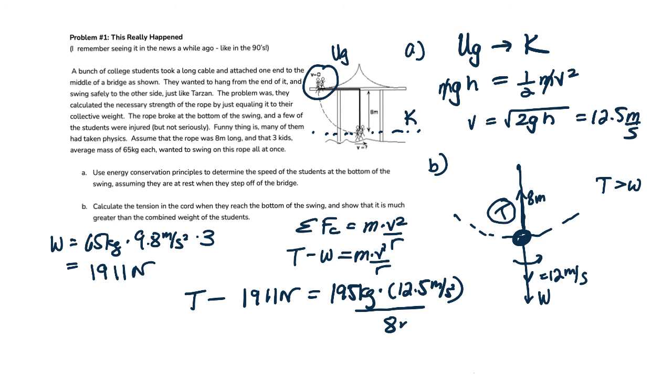And we get that the tension is equal to 195 times 12.5 squared, sorry about that, divided by 8, plus 1,911. For a grand total of 5,719.5 newtons. In other words, this parable does not end well.